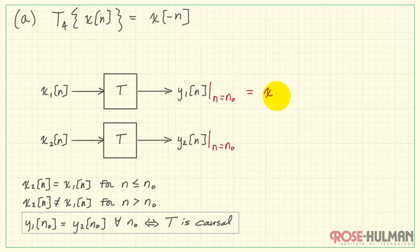So let's evaluate y1 at n equals n0. The system operation is x of minus n. Then we evaluate that at n equals n0. Same thing for signal x2. Now we need to determine if the time index is always less than or equal to n0 for all possible values of n0. So the emphasis here is on all values.